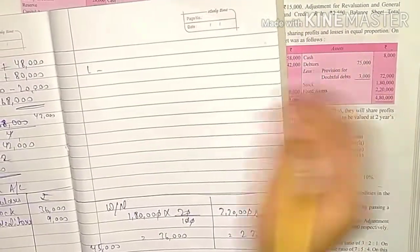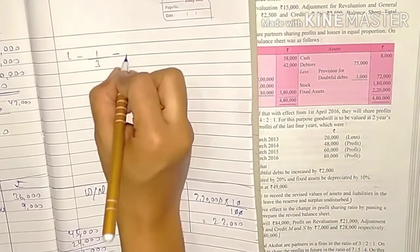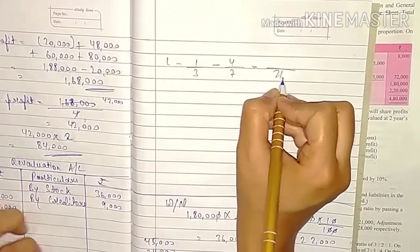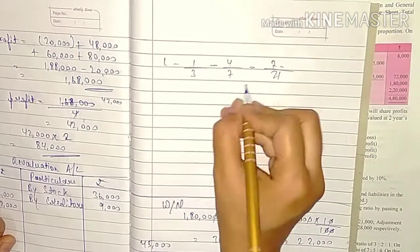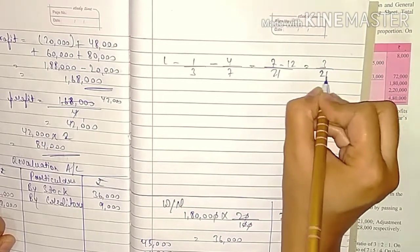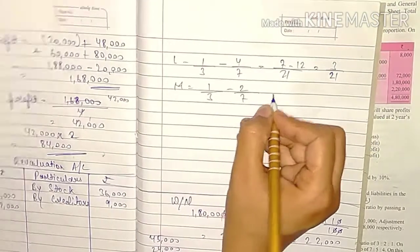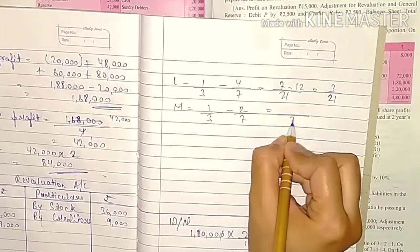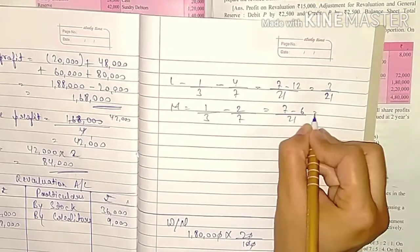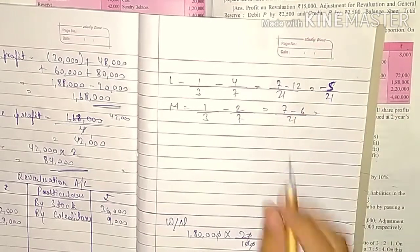First calculate gaining and sacrificing ratio. For L: old ratio 1/3 minus new ratio 4/7. LCM = 21. (7 − 12)/21 = −5/21 — L is gaining 5/21. For M: old ratio 1/3 minus new ratio 2/7 = (7 − 6)/21 = 1/21 — M sacrifices 1/21. For N: old ratio 1/3 minus new ratio 1/7 = (7 − 3)/21 = 4/21 — N sacrifices 4/21.